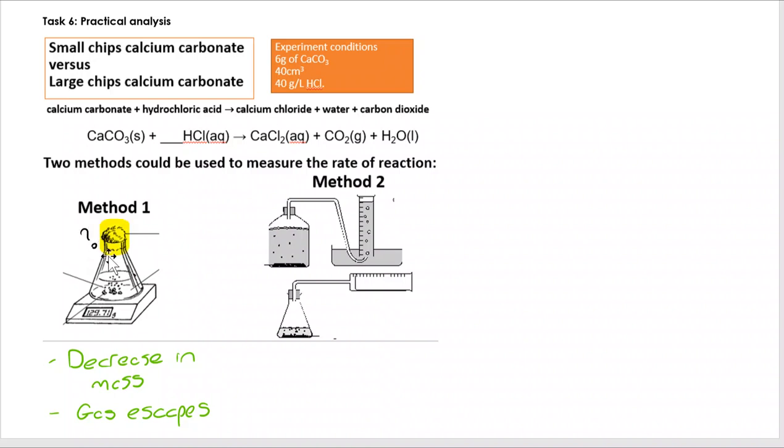Now, I've just highlighted the cotton wool. What is the purpose of the cotton wool? As a practical question, this is quite reasonable. And what we're looking at is there is the chance that if you've got a vigorous reaction going on, you might get spitting of liquid, which would give us a false loss of mass. It wouldn't be down to gas being produced. This prevents that - the gas can escape through the cotton wool, but we don't lose any of the liquid.